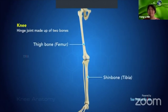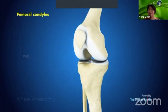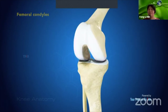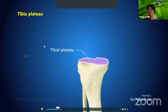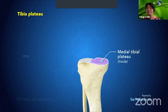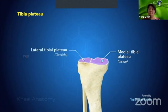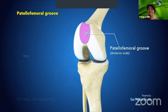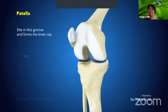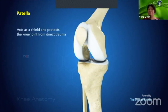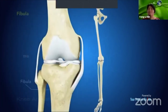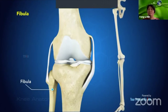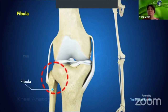The knee is a hinge joint made up of two bones: the thigh bone (femur) and the shin bone (tibia). The two round knobs at the end of the femur are called femoral condyles, which articulate with the tibial plateau. A small bone called the patella sits in the patellofemoral groove, acting as a shield. A fourth bone, the fibula, forms a small joint with the tibia but is not considered part of the main knee joint.